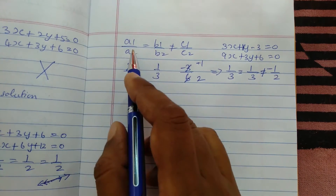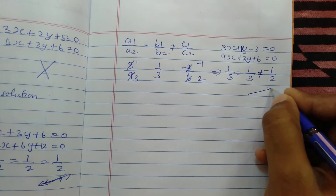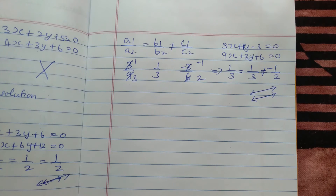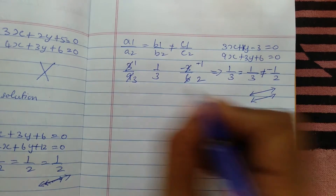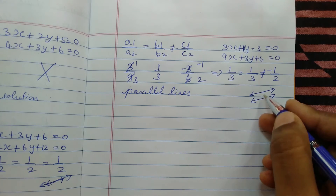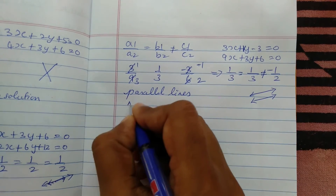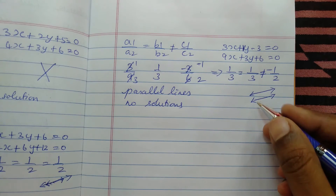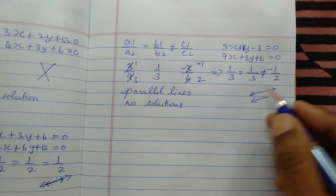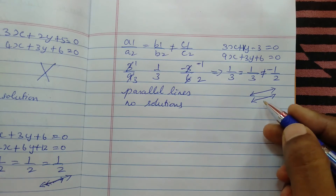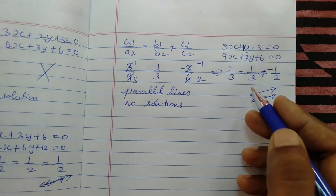When this condition is satisfied, the two equations form parallel lines — one line runs parallel to the other. Since parallel lines never meet, the equations give no solution. Because they yield no solution, these equations are said to be inconsistent.